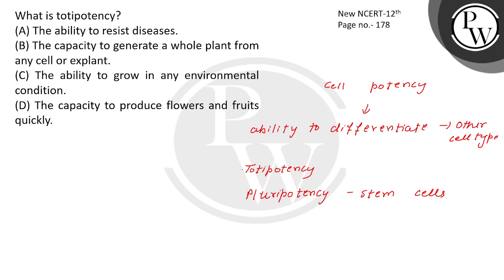Totipotency is the ability of a single cell to divide and produce all of the differentiated cells in an organism. Examples here include spores and zygotes — they can make everything, they can make a whole organism. So the single cell can divide and produce all of the differentiated cells.